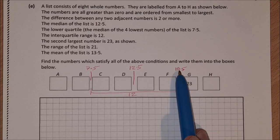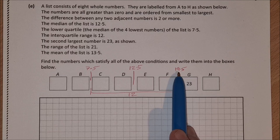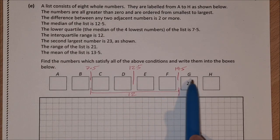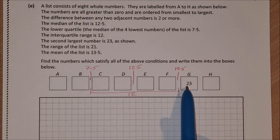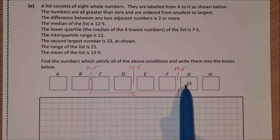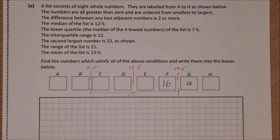So it's the average of F and G is 19.5. Well, if the average is 19.5, then that means the two numbers added together equals 39. If G is 23, then F is just going to be 39 minus 23, which is 16. So that gives us the number F.